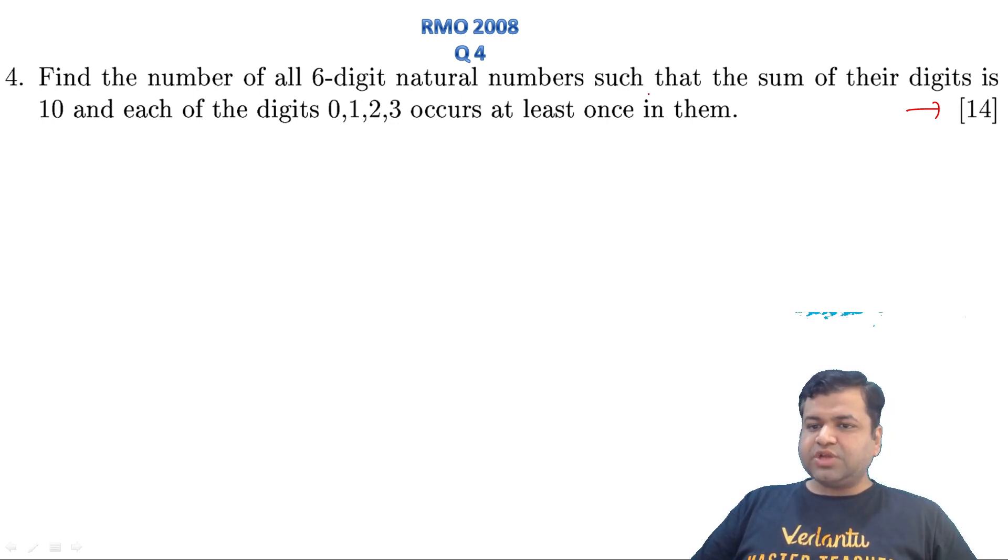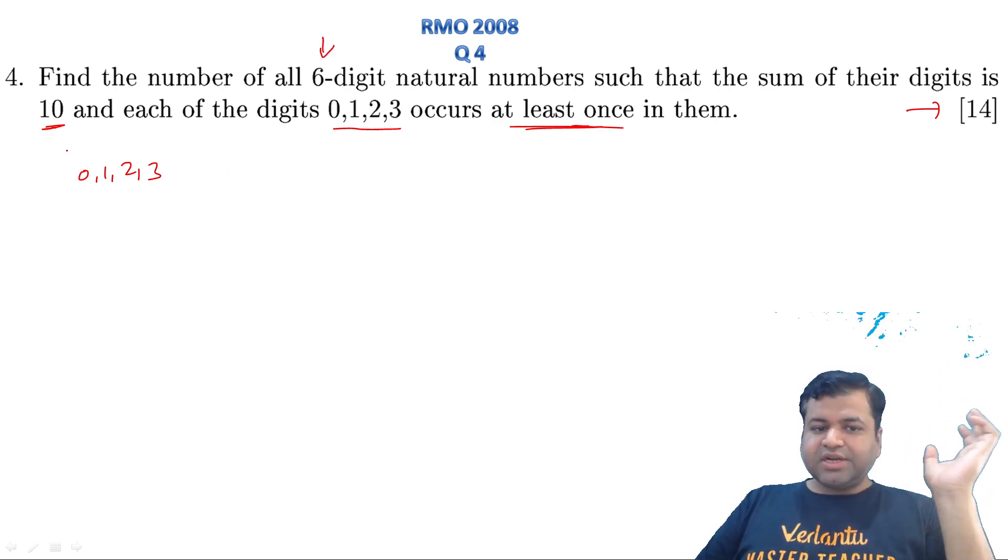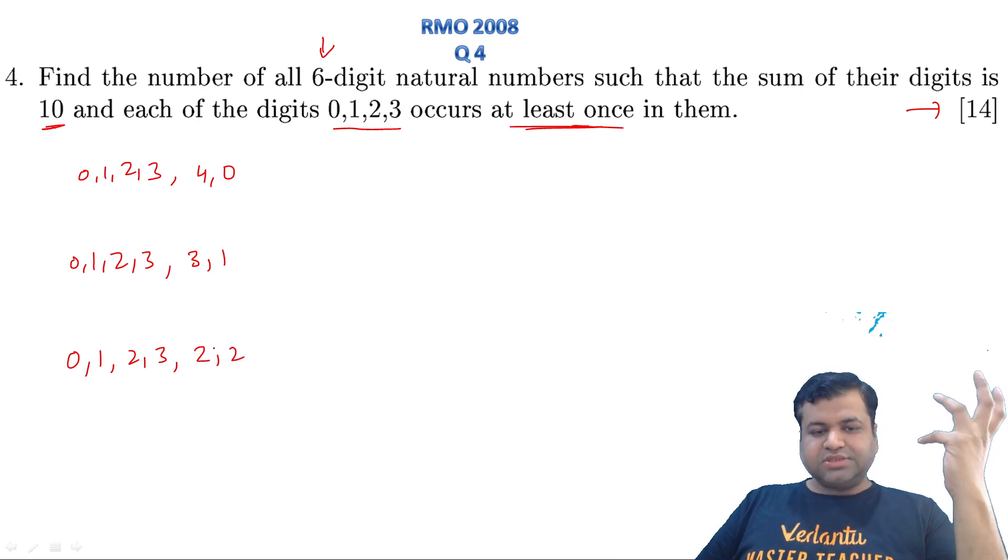The question is: find the number of all 6-digit natural numbers such that sum of their digits is 10, and each of the digits 0, 1, 2, 3 occurs at least once. If we need 0, 1, 2, 3 to appear, then 4 digits are these. We need to make a 6-digit number, so we need two more digits. But the sum should be 10. Already the sum is 3 + 2 + 1 = 6, so we need 2 digits whose sum makes 10. So either it's 4, 0 as a possibility, or we can take 3, 1, or the possibility is 0, 1, 2, 3, 2, 2. These are the only 3 possibilities.